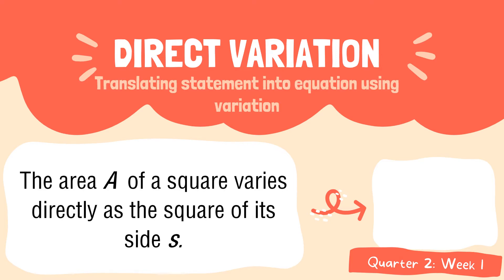Next, the area a of a square varies directly as the square of its side s. If you are going to write this statement into an equation, it is now written as a is equal to k times s squared. As you can see from the statement, it says that the area of a square varies directly as the square of its side, which is s, so from our equation this is written as a is equal to ks squared. Those are different sample statements that we can translate into an equation using direct variation.